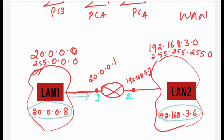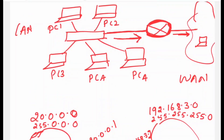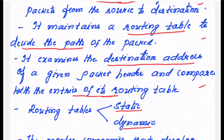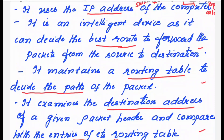The packet starts from the source network, goes to interface 1 of the router, and the router forwards the packet out interface 2 to the destination LAN. From there it reaches the destination host. This is how the router connects two networks. Now you can clearly understand: it maintains a routing table to decide the path, and it examines the destination address of a given packet header and compares it with the routing table entries.